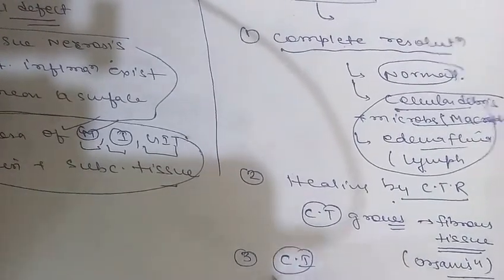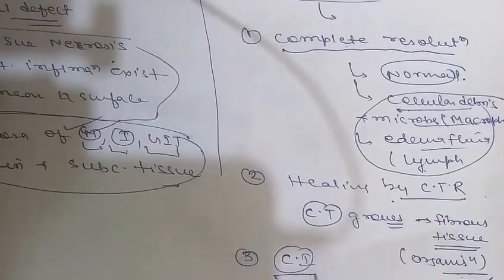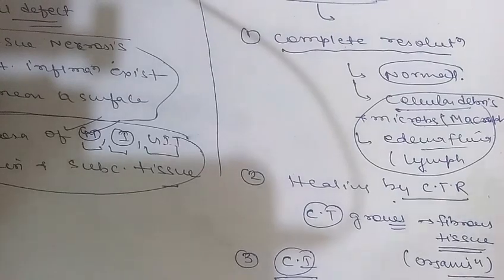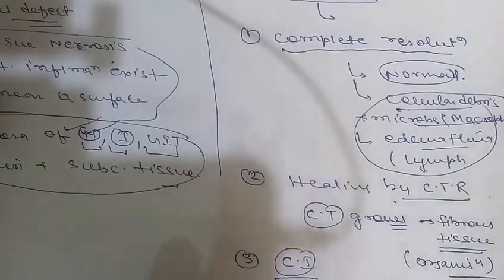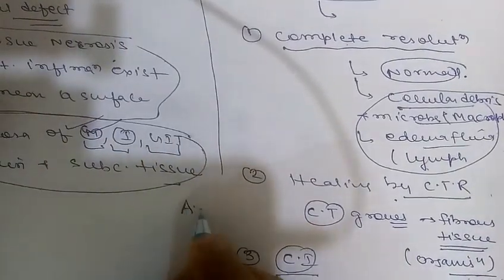The third outcome is the progression of the response to chronic inflammation. So these are the three main outcomes of acute inflammation — complete resolution, healing by connective tissue repair, and progression to chronic inflammation.